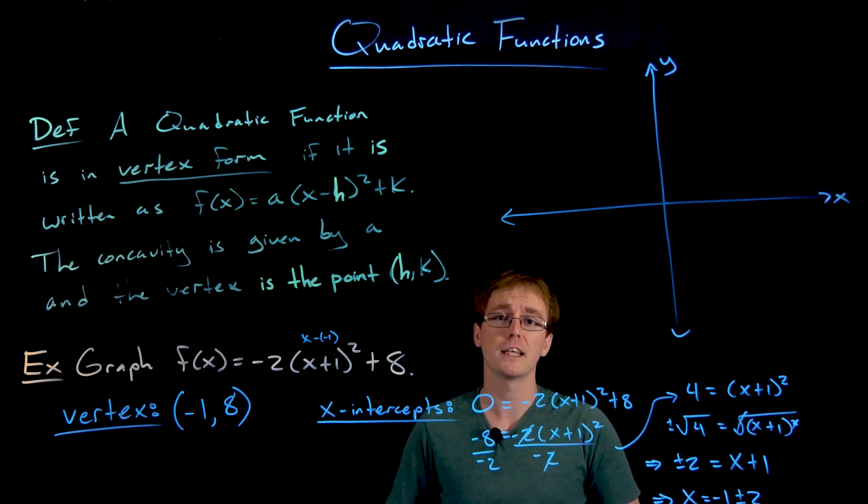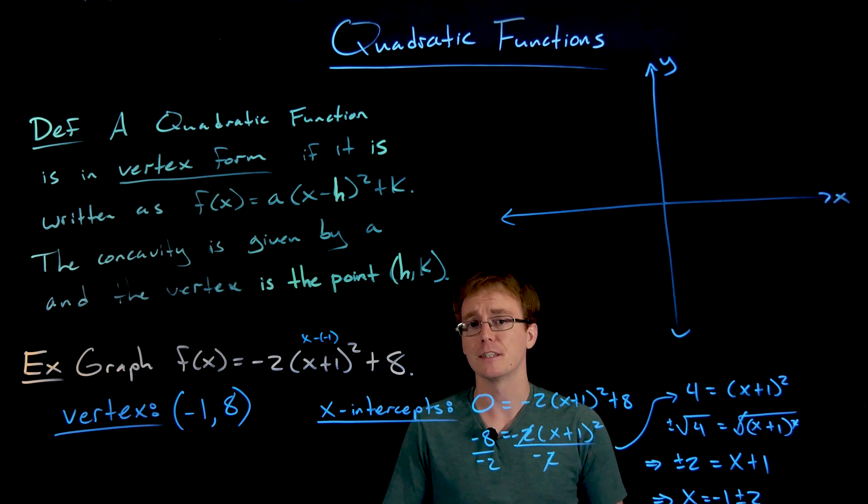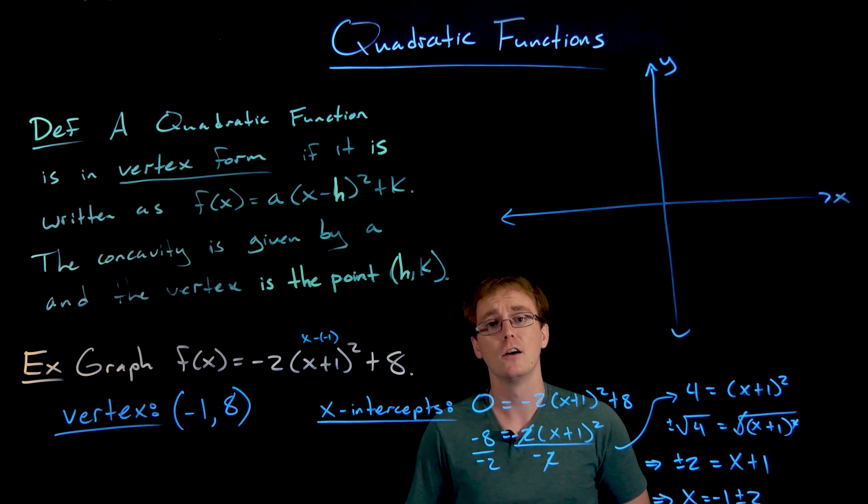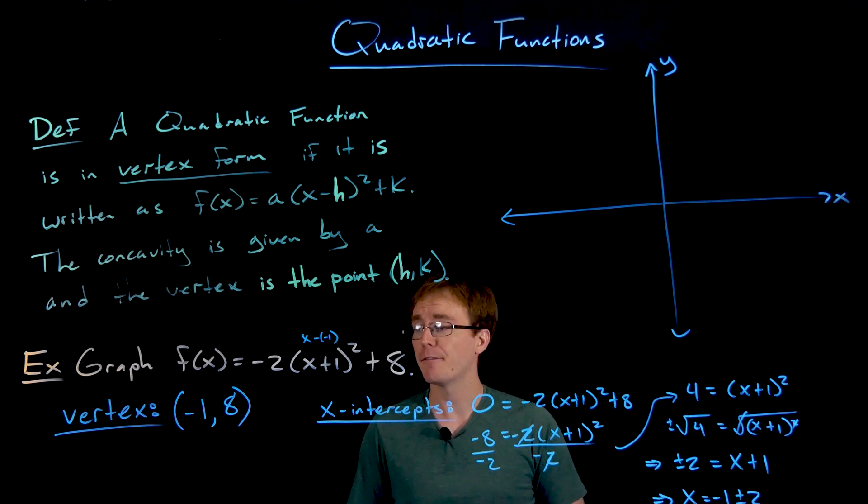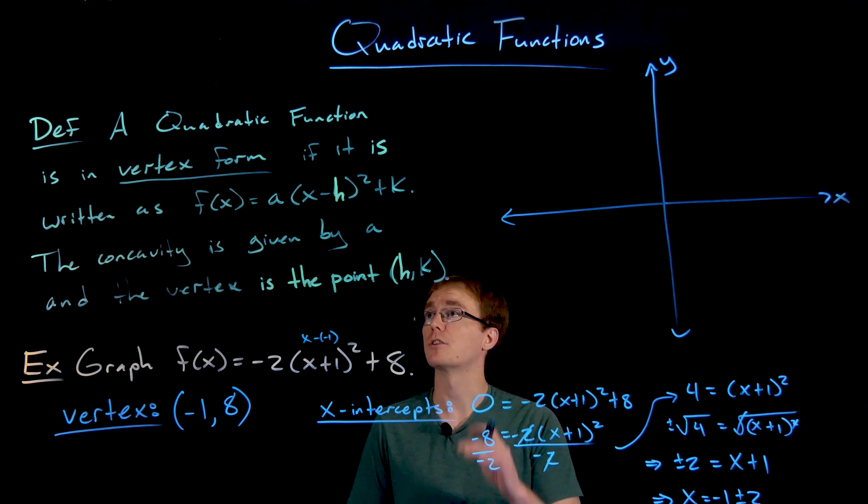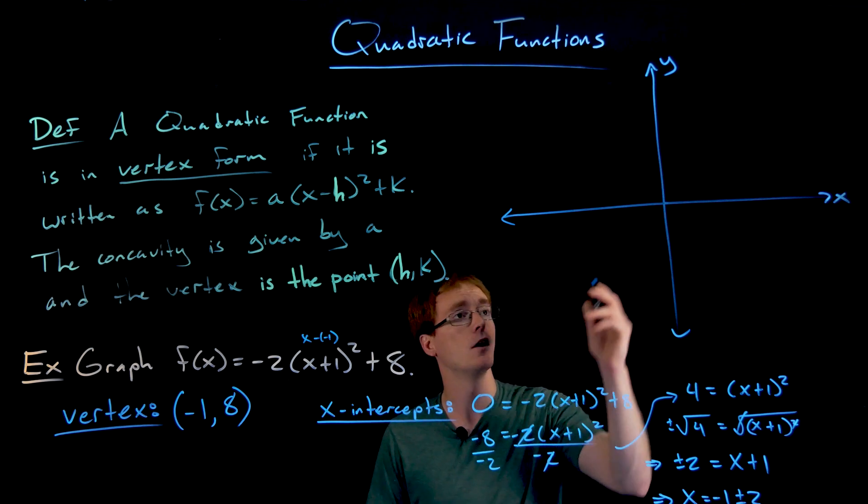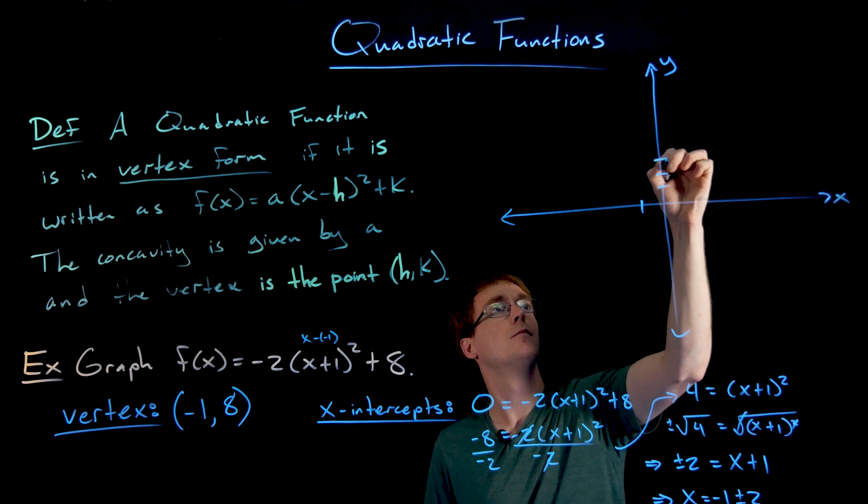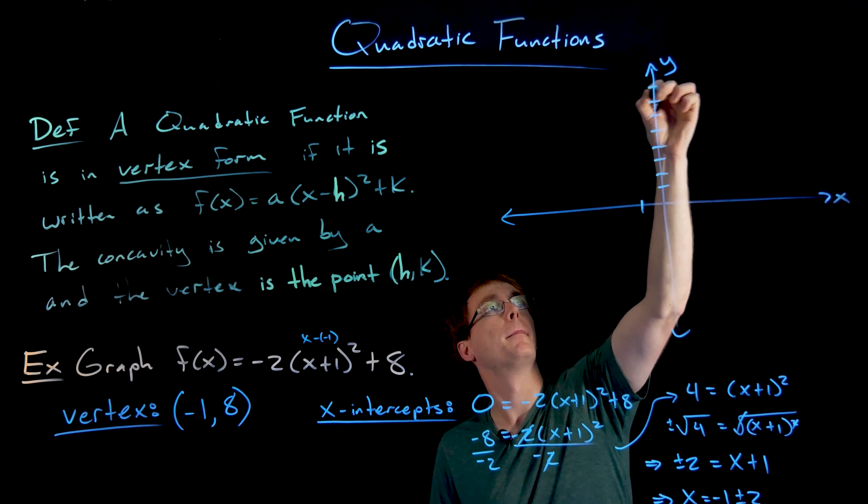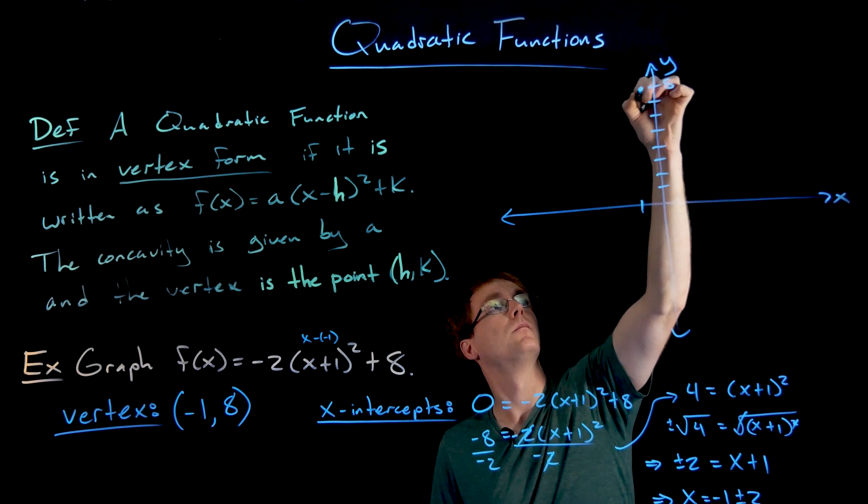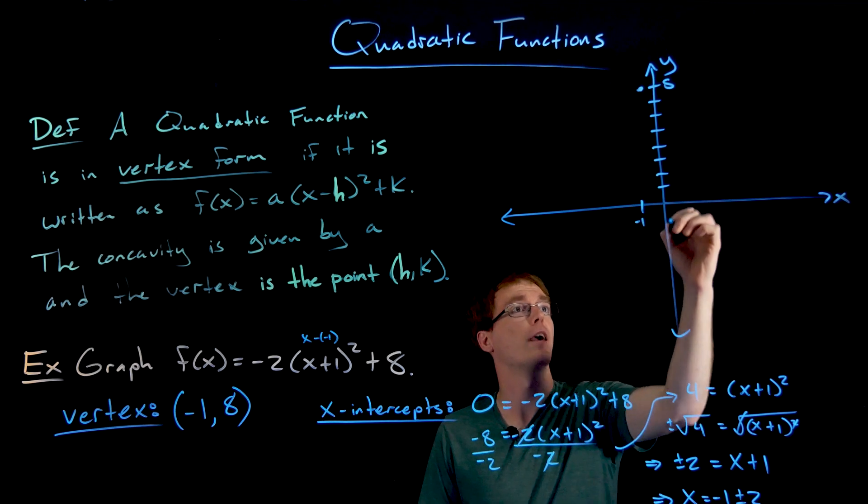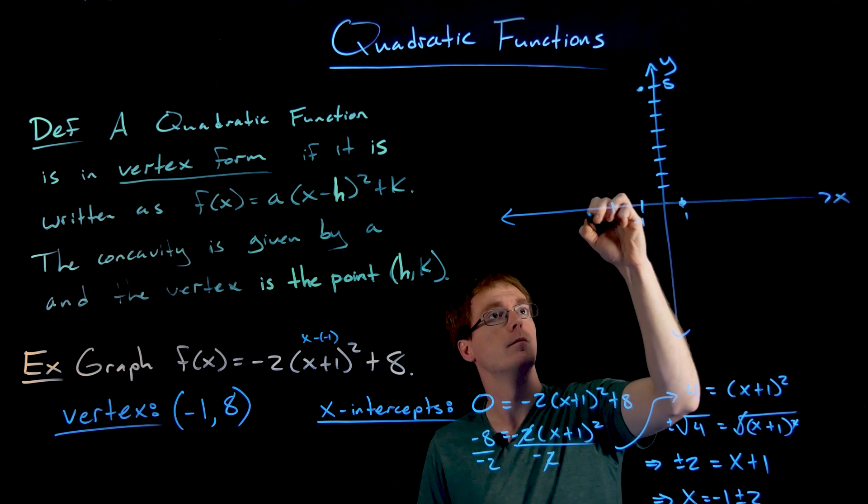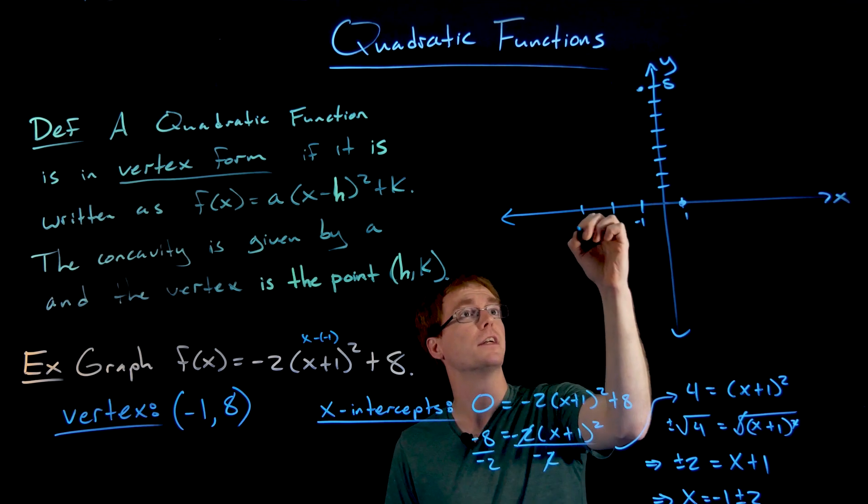So it's still not too bad or time consuming to find those x-intercepts if they exist for our quadratic function when it's expressed in vertex form. We just have to do it a little bit differently using something like a square root method instead of the quadratic formula or factoring. Now we have all the information we need in order to graph our parabola. Our vertex is at the point (-1, 8), and our x-intercepts are at x = 1 and x = -3.